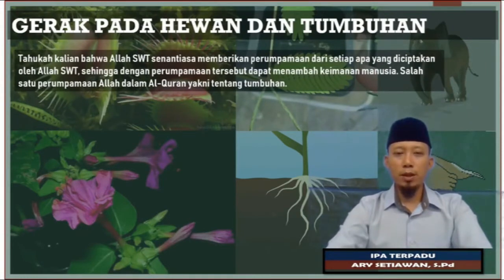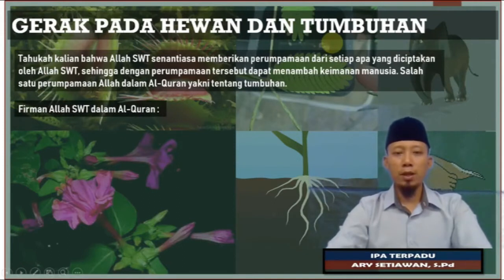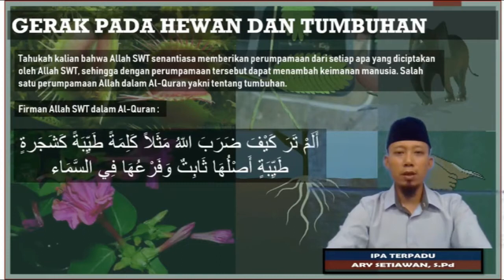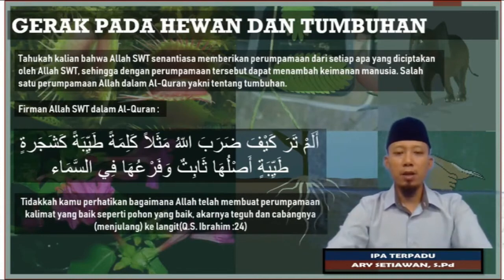Tahukah kalian bahwa Allah SWT senantiasa memberikan perumpamaan dari setiap apa yang diciptakan-Nya, sehingga dengan perumpamaan tersebut dapat menambah keimanan manusia. Salah satu perumpamaan Allah di dalam Al-Quran adalah tentang tumbuhan. Firman Allah SWT: 'Alam tara kaifa daraba Allahu mathalan kalimatan tayyibatan kashajaratin tayyibah, asluha thabitun wa far'uha fi al-sama.' Yang artinya: tidakkah kamu perhatikan bagaimana Allah telah membuat perumpamaan kalimat yang baik seperti pohon yang baik, akarnya teguh dan cabangnya menjulang ke langit. Al-Quran Surat Ibrahim ayat ke-24.